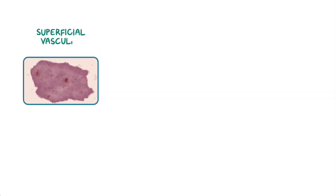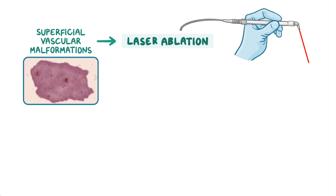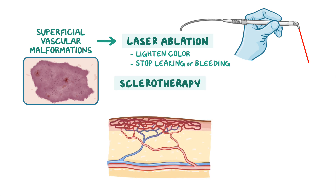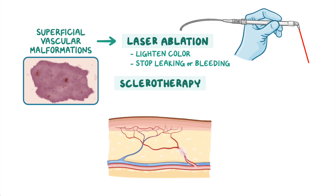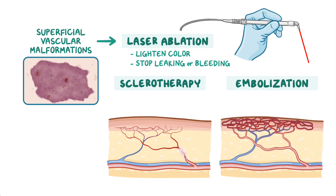Superficial vascular malformations may be treated with laser ablation, most commonly to lighten the color of capillary malformations or to stop leaking or bleeding from superficial lymphatic malformations. Sclerotherapy, where a chemical is injected into the defective vessel causing it to scar down and close off, or embolization, where injections are given to clot off the defective vessel artificially, may be performed.